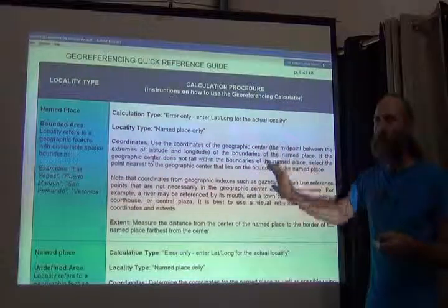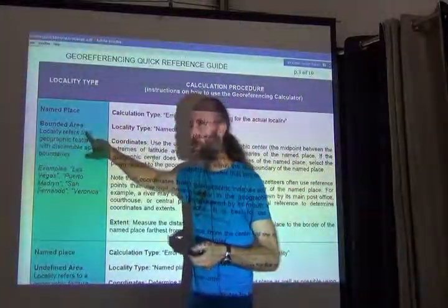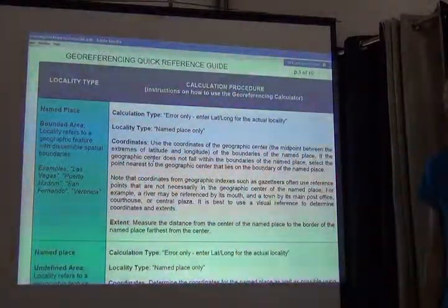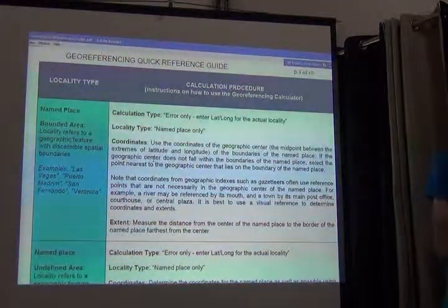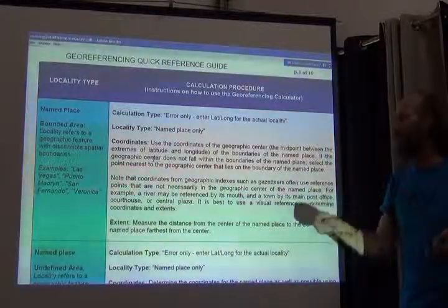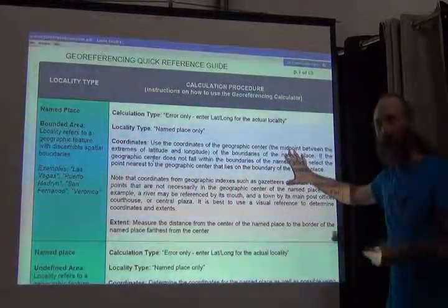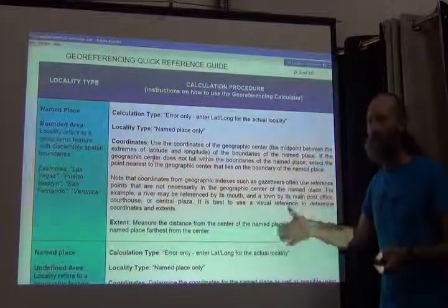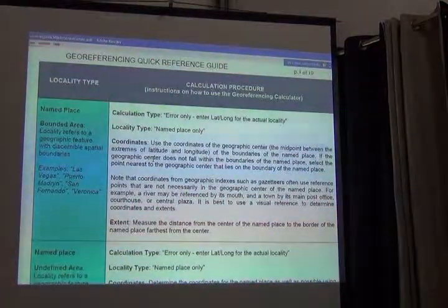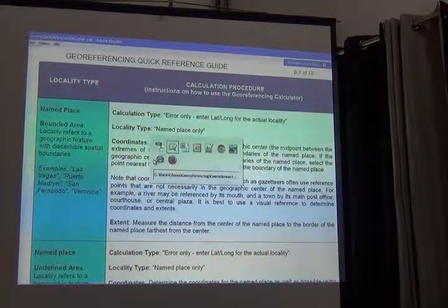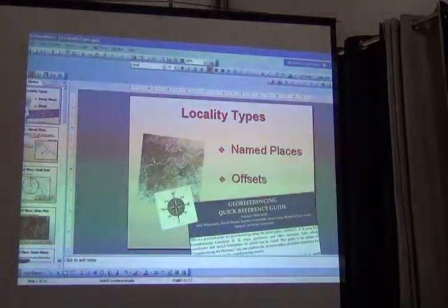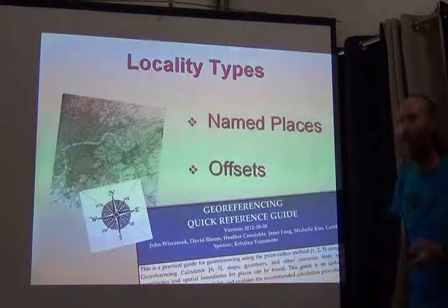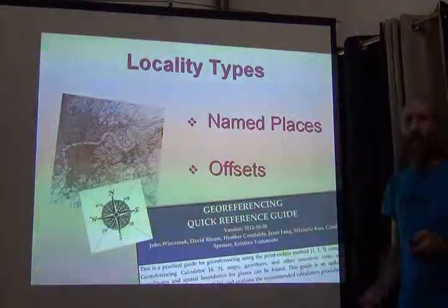It's meant to be as easy as that once you're able to distinguish one locality type from another. The PowerPoint presentation in your folder is a complement to this document because the document has no pictures — the presentation has pictures showing examples of many different locality types. That piece of paper should be sitting beside your desk whenever you're geo-referencing.